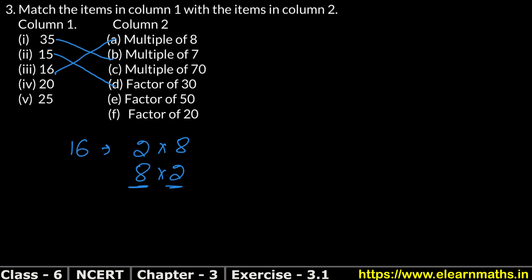Next, 20 is directly a factor of 20. And lastly, 25: since 2 times 25 equals 50, 25 is a factor of 50. That completes the matching. One item — multiples of 70 — had no matching value given, so we leave it. This is our answer.